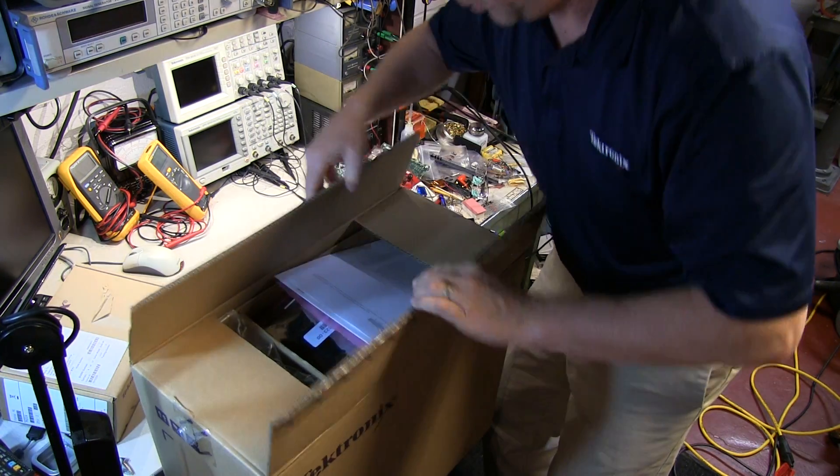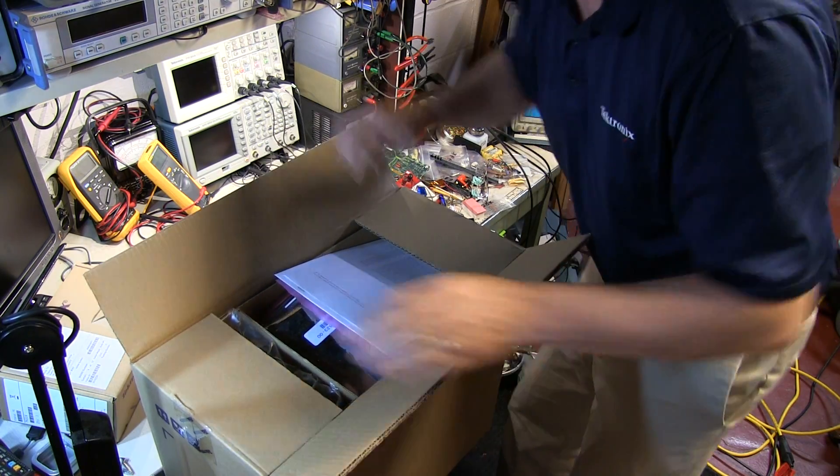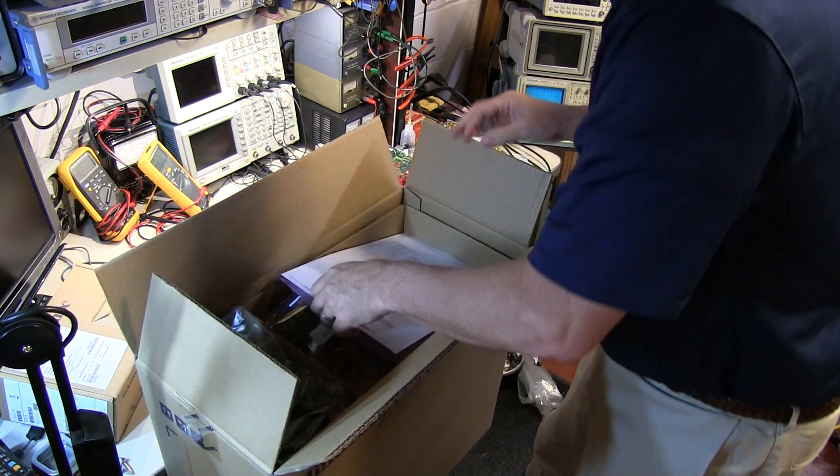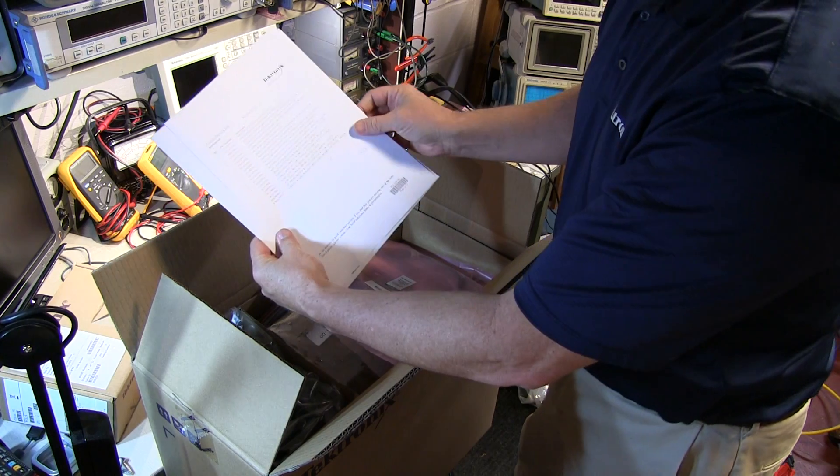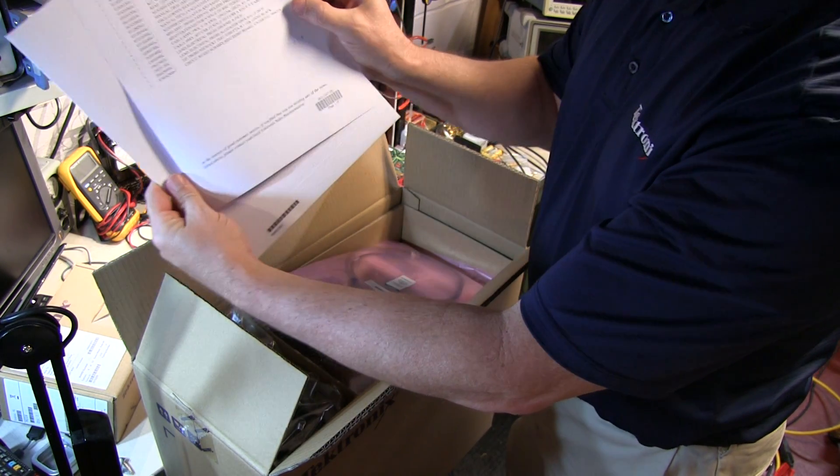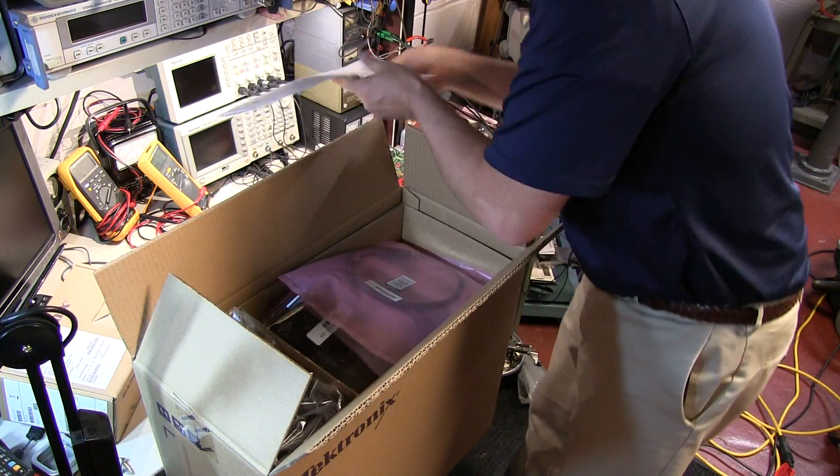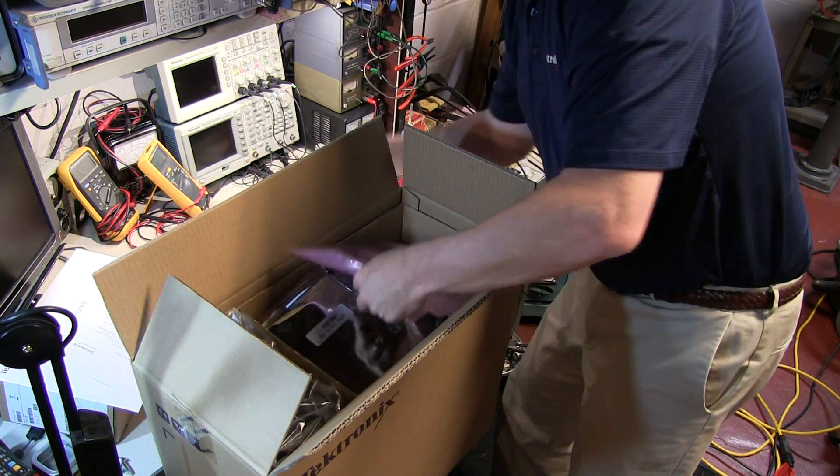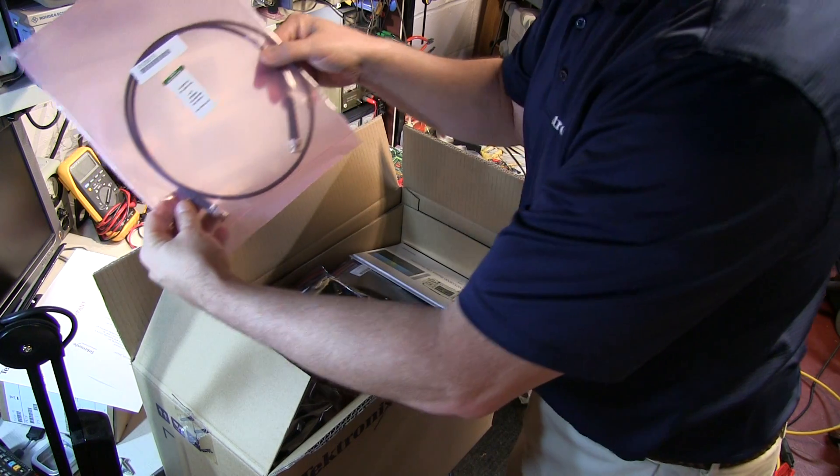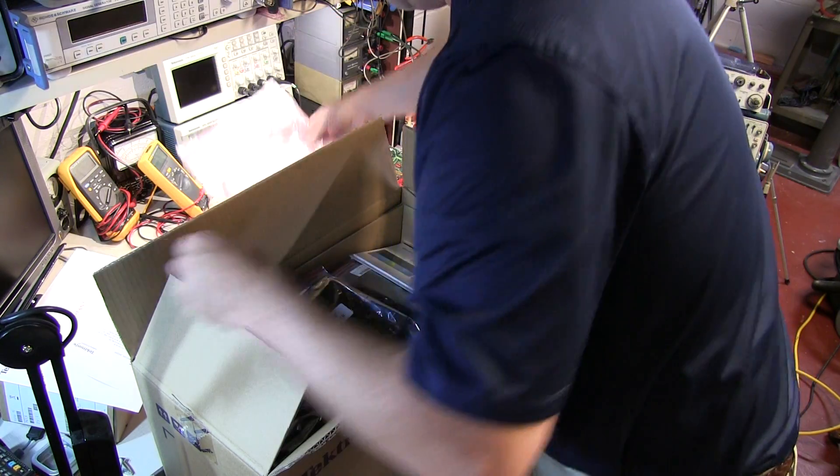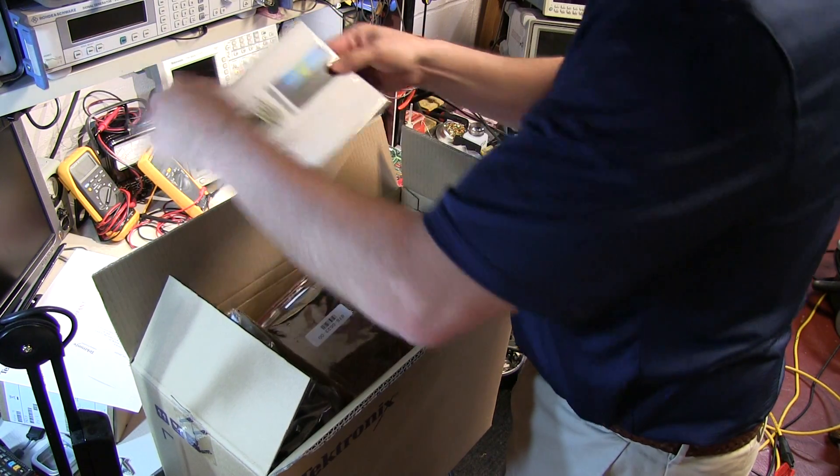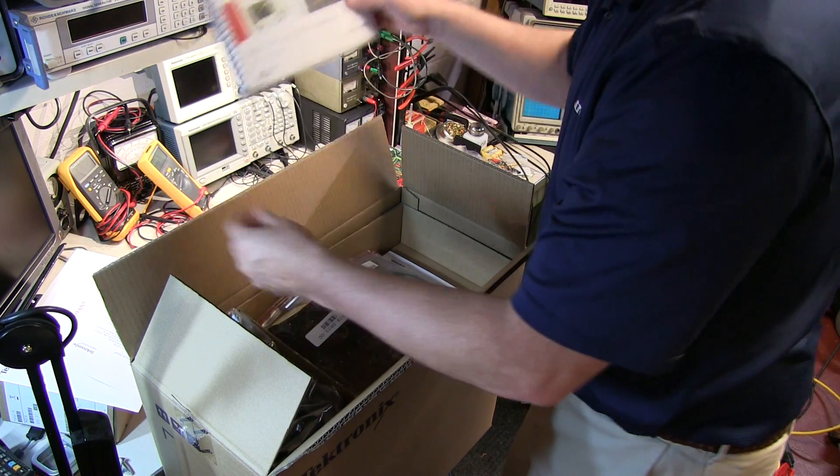Unboxing videos may not be that exciting but an exciting day for us here in the lab. So we've got the usual paperwork, the sheet of all the accessories, and the calibration certificate. We've got a BNC cable for the arbitrary function generator and the demonstration guide.